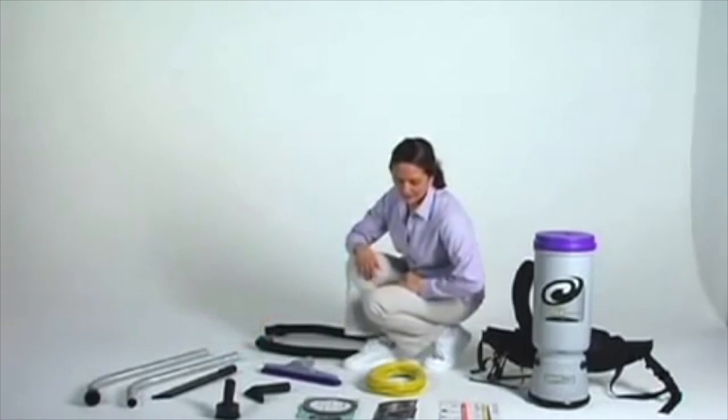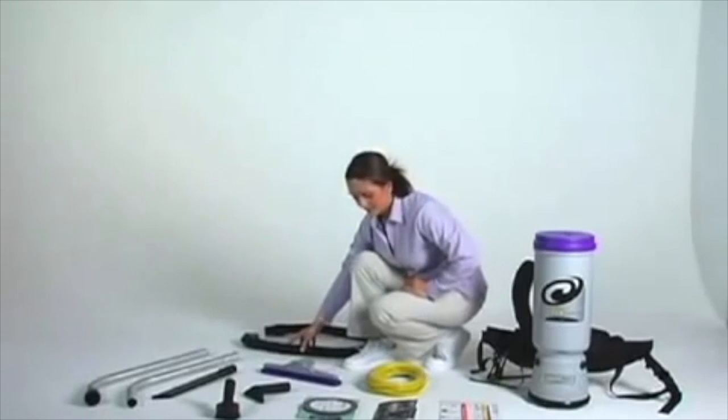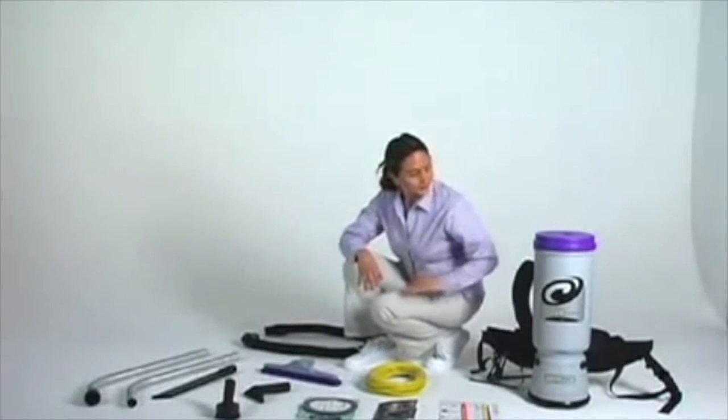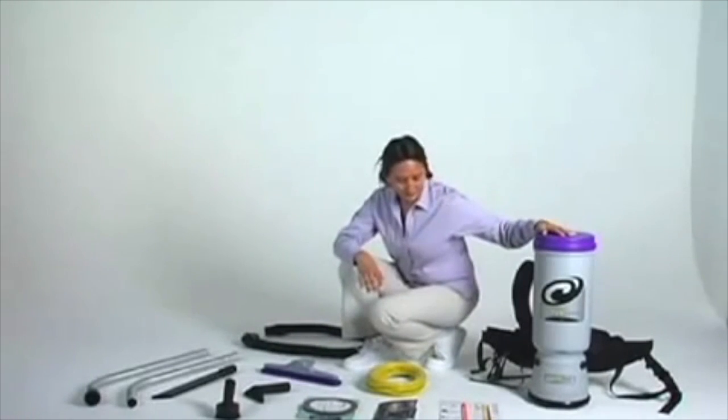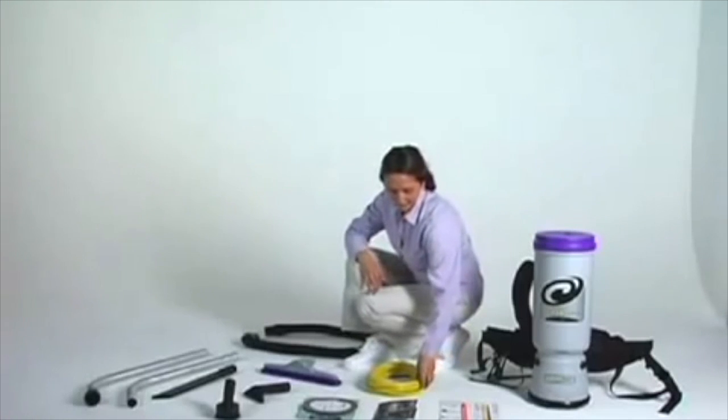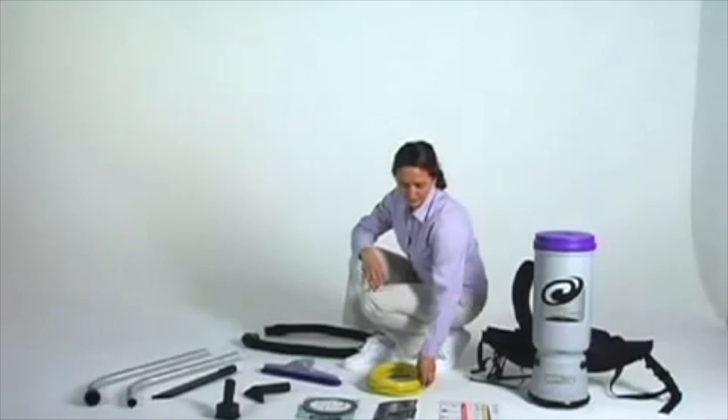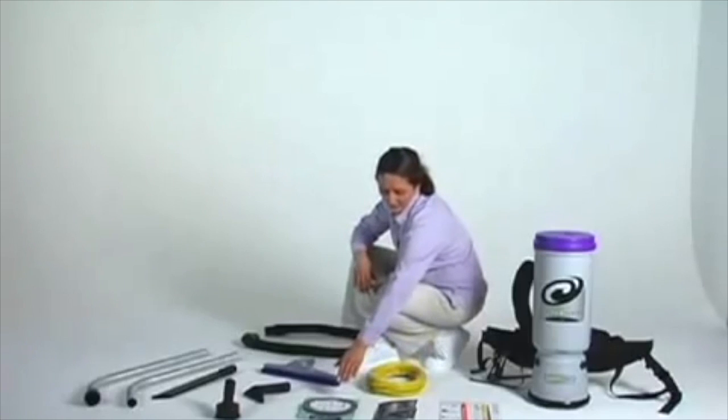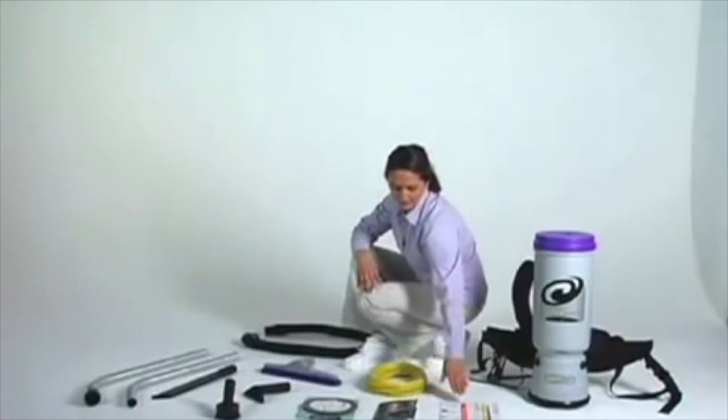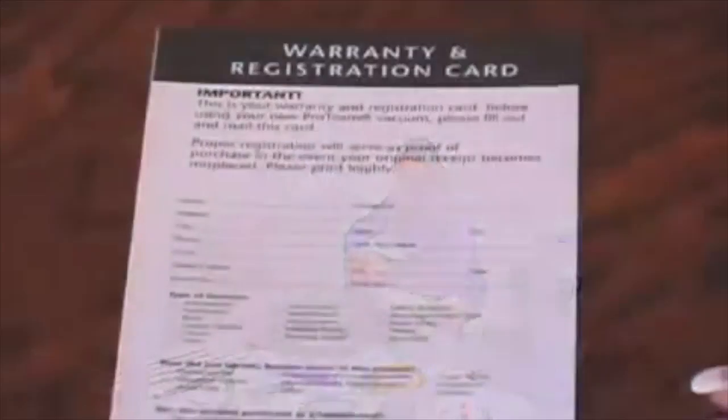Next locate the static dissipating hose. Now find the vacuum, then locate the 50-foot extension cord, and lastly the literature kit which will include a replacement intercept microfilter, a quick start poster, and an owner's manual.